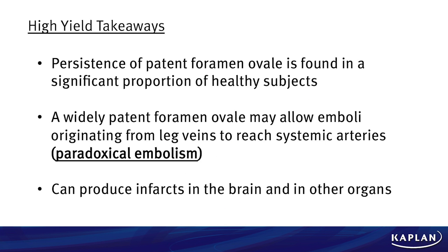High-yield takeaway points: persistence of the patent foramen ovale is found in a number of healthy subjects, so you don't always know that you have it. A widely patent foramen ovale may allow emboli, which originate in the leg veins, to reach the systemic arteries — something called a paradoxic embolism. This can produce infarcts in the brain and other organs where DVTs don't typically go. These are our high-yield take-home points for paradoxic embolism, an important concept for both boards and the wards.